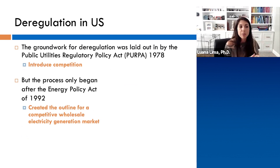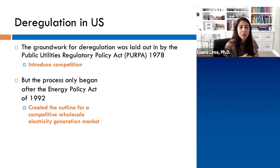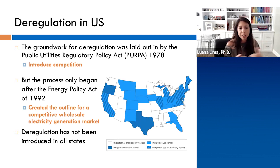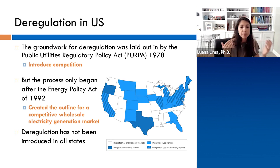The groundwork for deregulation in the US was laid out by the Public Utilities Regulatory Policy Act (PURPA) in 1978, but the process only began in the early 1990s with the Energy Policy Act of 1992, which created the outline for a competitive wholesale electricity generation market. Here in the US, deregulation has not been introduced in all states — some states have both gas and electricity markets deregulated, some have one or the other, and states like North Carolina still have both gas and electricity regulated.